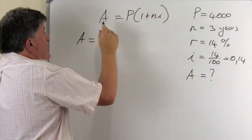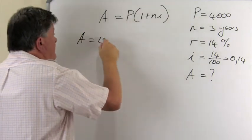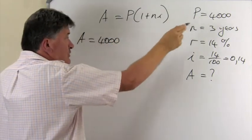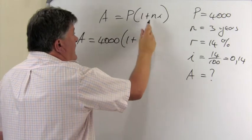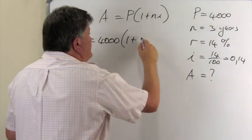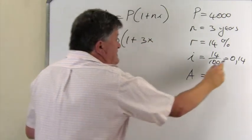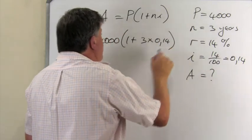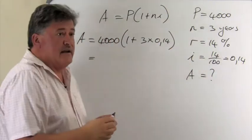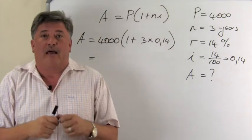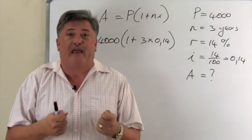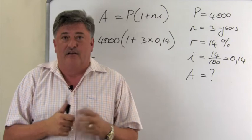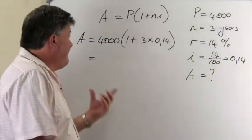So what is this A equal to? The amount of the hire-purchase loan, the 4,000, one plus N, in this case which is three years, times by the interest rate 0.14. Now this answer will be the amount that she is going to pay for this tumble dryer. Let's use our calculators and find this answer.